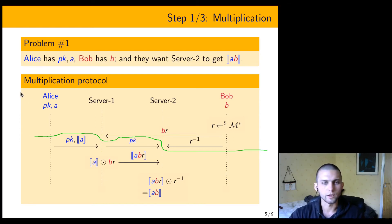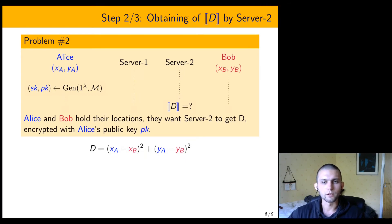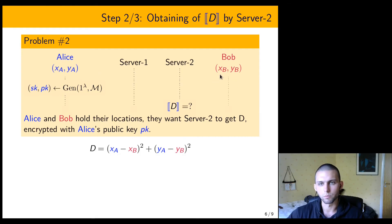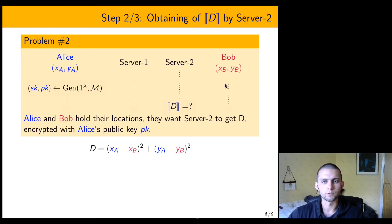Now we want something more complicated: we want server 2 to learn the encryption of the square distance between Alice and Bob. Alice starts knowing her coordinates, Bob starts knowing his coordinates, and in the end we want server 2 to know the encryption of the square distance between them.